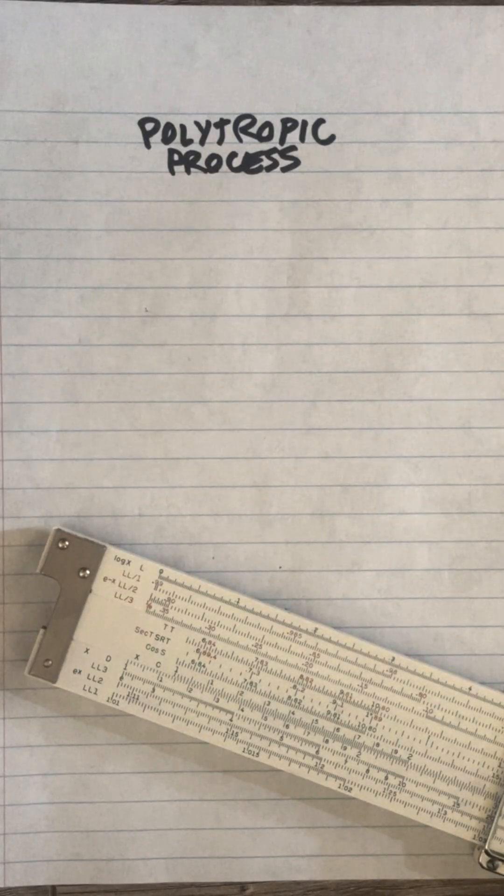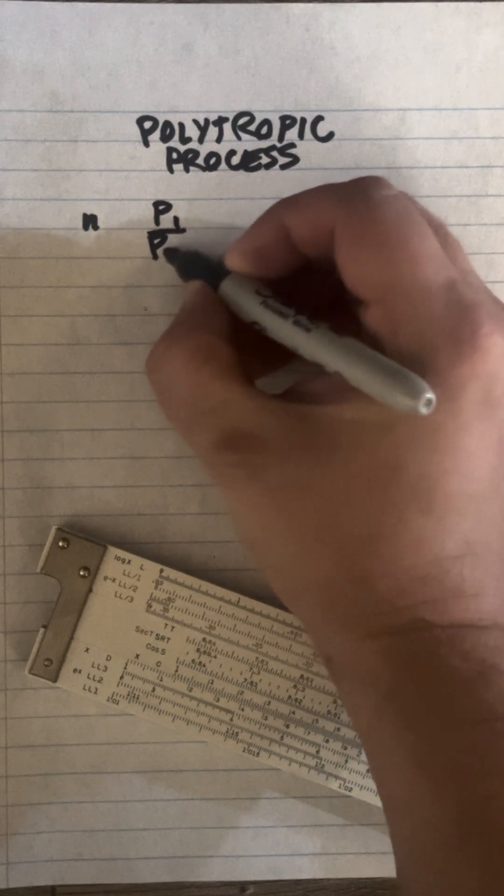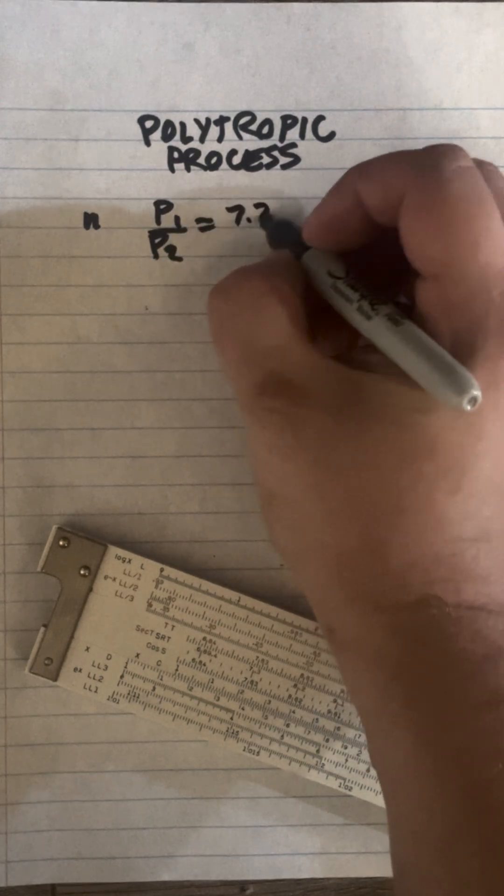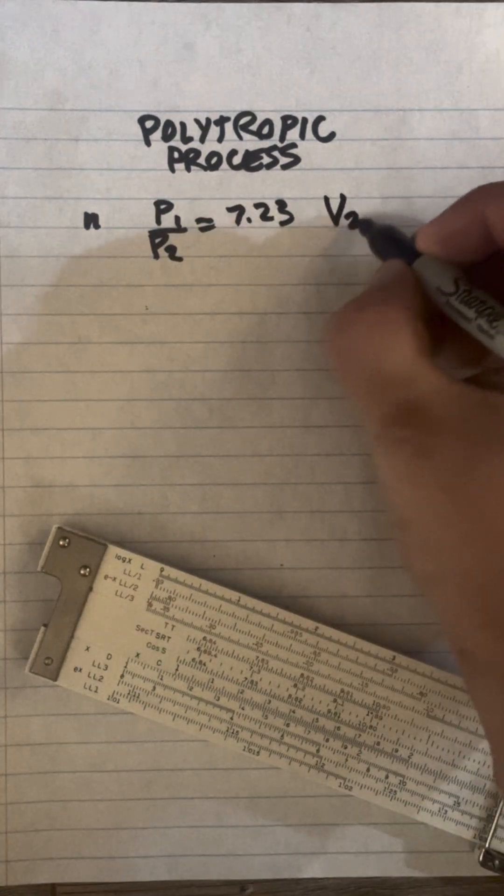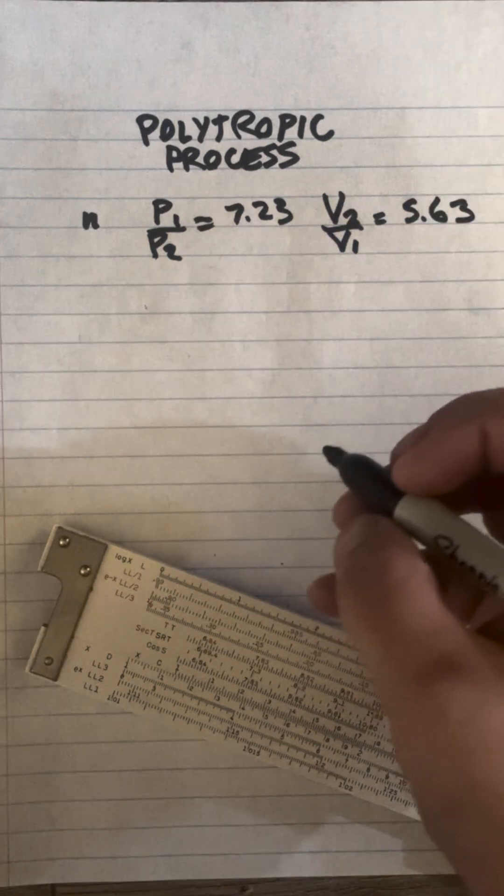Okay guys, a little bit more engineering today. We're going to solve a polytropic process and find n, assuming that p1 over p2 is 7.23 and v2 over v1 is 5.63.